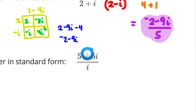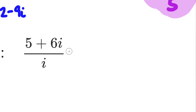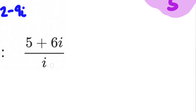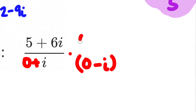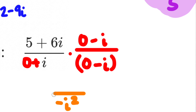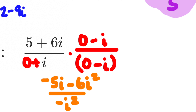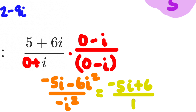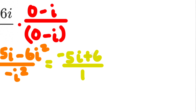The last one: convert (5 + 6i)/i to standard form. There's an i on the bottom, so multiply by its conjugate: -i. The bottom becomes -i² = 1. The top becomes -5i - 6i² = -5i + 6. Rewriting in standard form — real part first — the final answer is 6 - 5i.